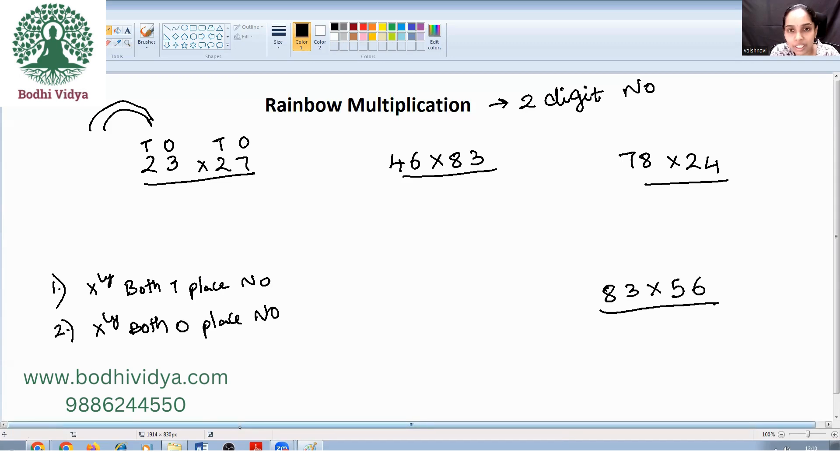Then we need to do this rainbow. Rainbow is what? This and this. So we need to multiply the tens with the ones and ones with the tens. This tens with this ones and this one with this tens and try to add. So multiply tens with ones and ones with tens and add it to get the middle term.